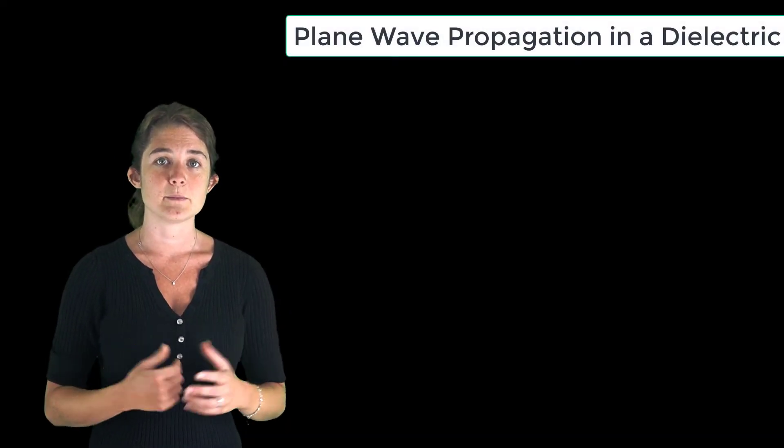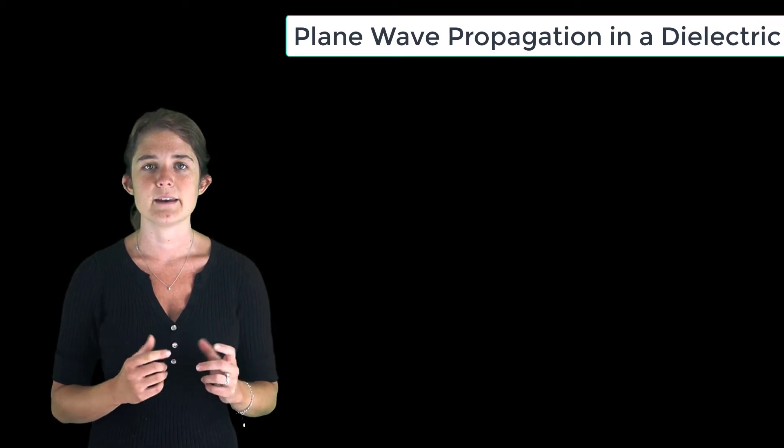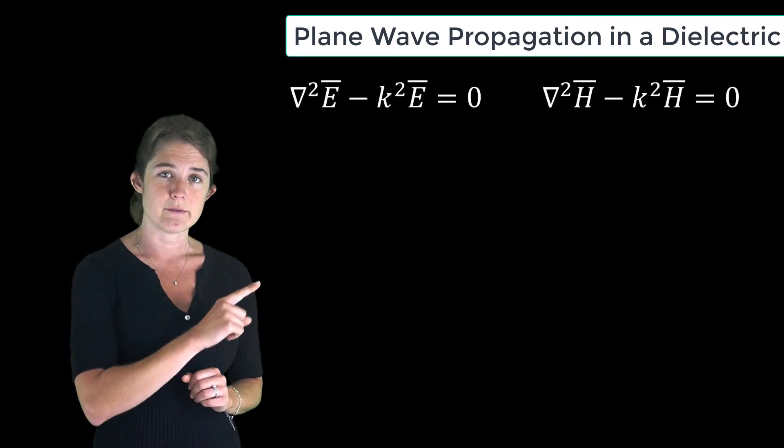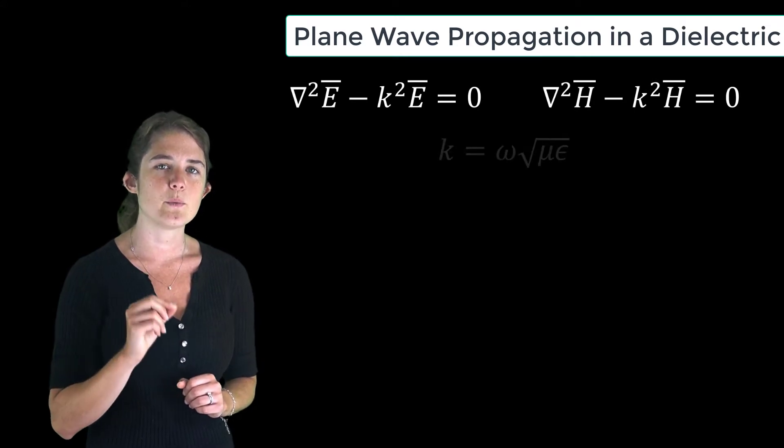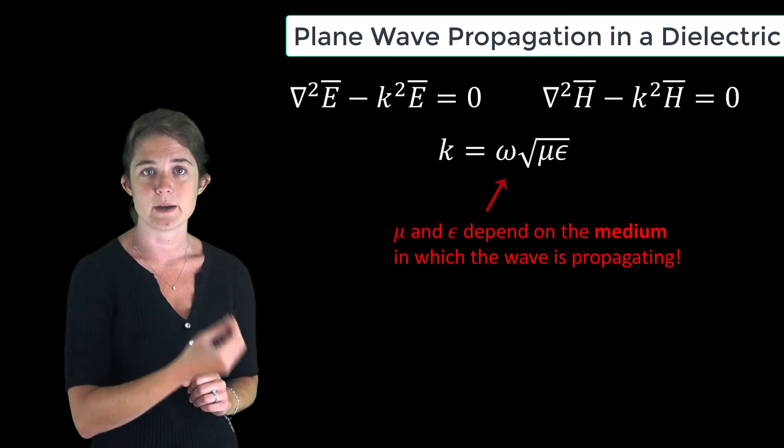Next, let's consider how the presence of a material will affect the propagation of plane waves. Again, let's recall the source-free wave equations. We said that the wave number k is given by omega times the square root of mu epsilon.